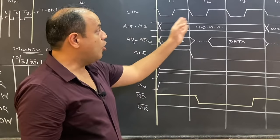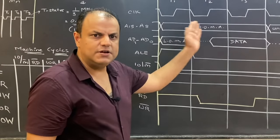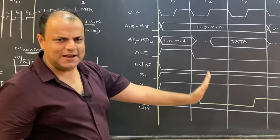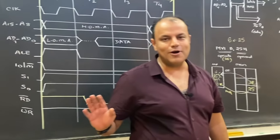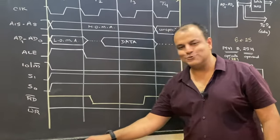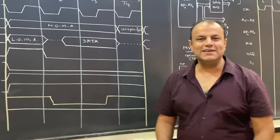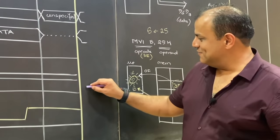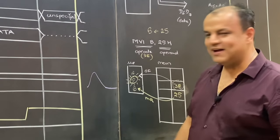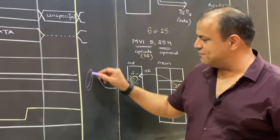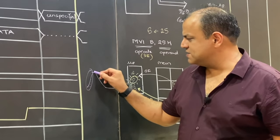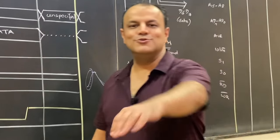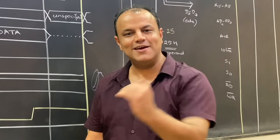Opcode fetch है तो ये signal low होना चाहिए, ये high होना चाहिए — buses में क्या activities होंगी और कौन से time पे होंगी, वो सीखेंगे। एक बार opcode fetch बनाना सीख लिया तो आपका काम हो गया। मैं बच्चों को बताता हूं — 21 साल से पढ़ा रहा हूं। Timing diagram पढ़ना ऐसा है: शुरुआत में बहुत effort होता है, लेकिन एक बार यहाँ पहुँच गए — उसके बाद it's a downhill slope, अपने आप बनते जाएंगे।